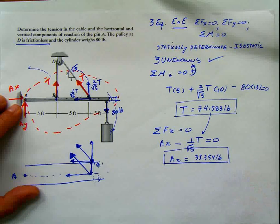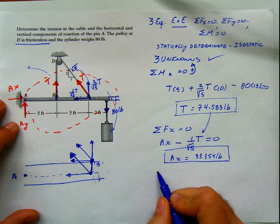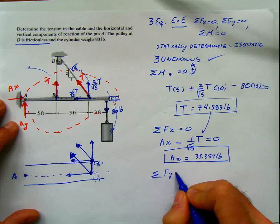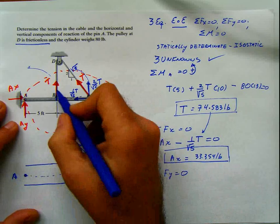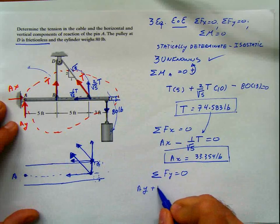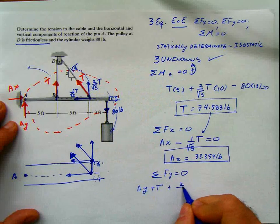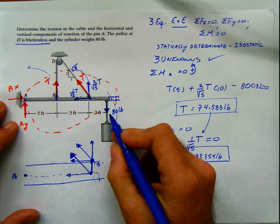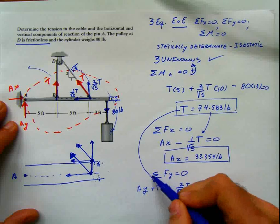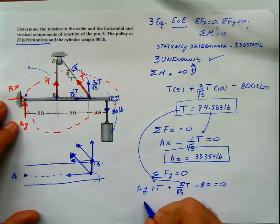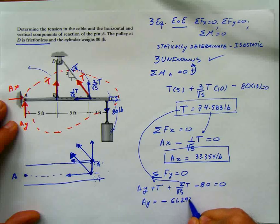Always box your answers and always put your units — that's very important. Last equation: summation of forces in y equals 0. We have Ay plus T plus the vertical component of T, which is 2 divided by square root of 5 times T, minus 80 equals 0. Since we know T, we plug it in and get Ay equals negative 61.292 pounds.